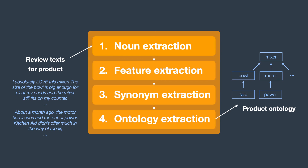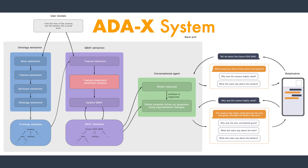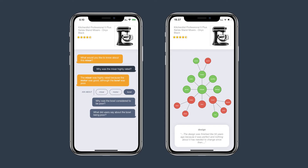Each of the tasks is quite involved, but if you're interested, they are detailed in my project report, which is linked in the description. Using this pipeline, AdaX can automatically extract an ontology for a product from its review texts, which enables it to provide explanations for any product. Most of the magic of AdaX happens on the backend server, where the ontology extraction, QBAF extraction, and conversational agent processes communicate via two databases. The conversational agent then handles the communication with a user-facing explanation interface. The QBAF constructed by AdaX can easily be adapted to various different explanation interfaces, such as the conversational and graph-based ones shown here.